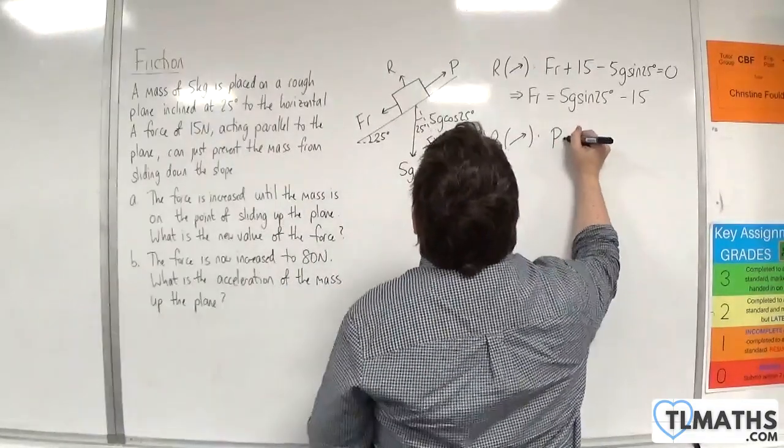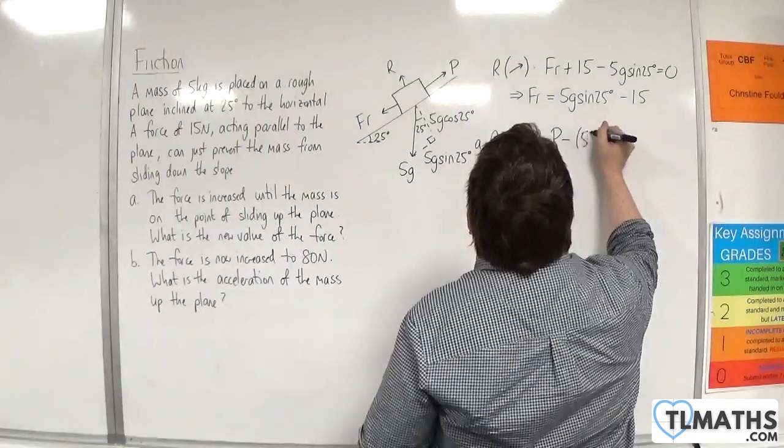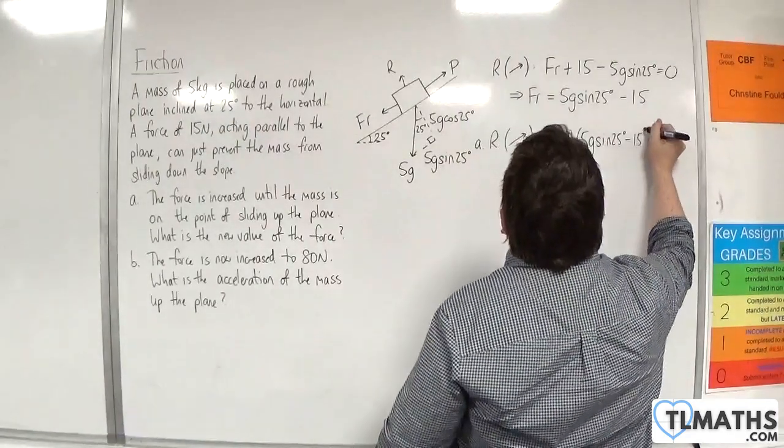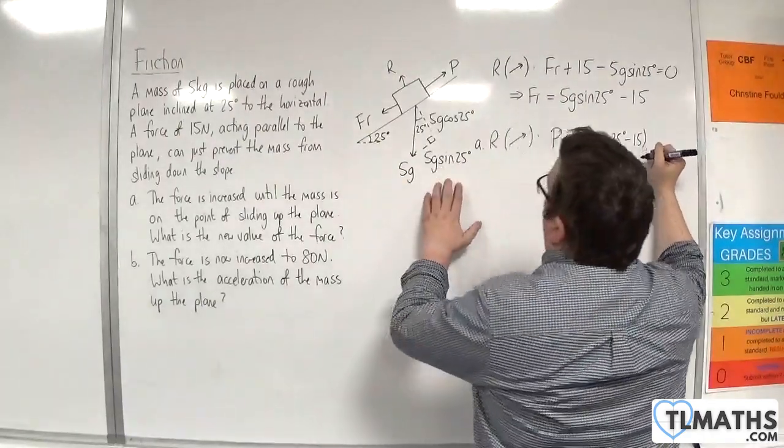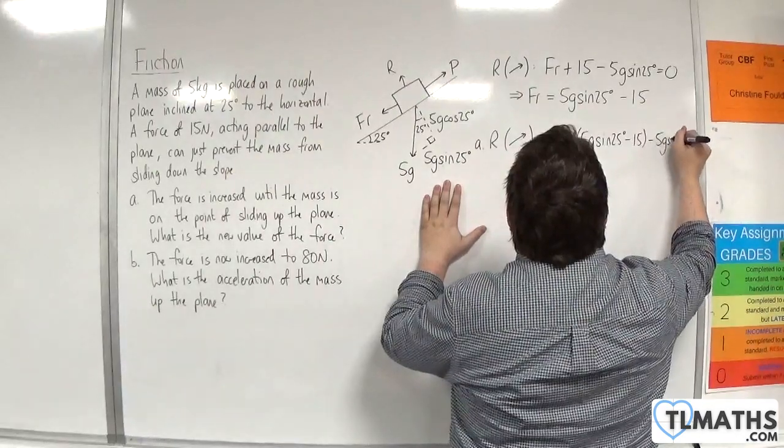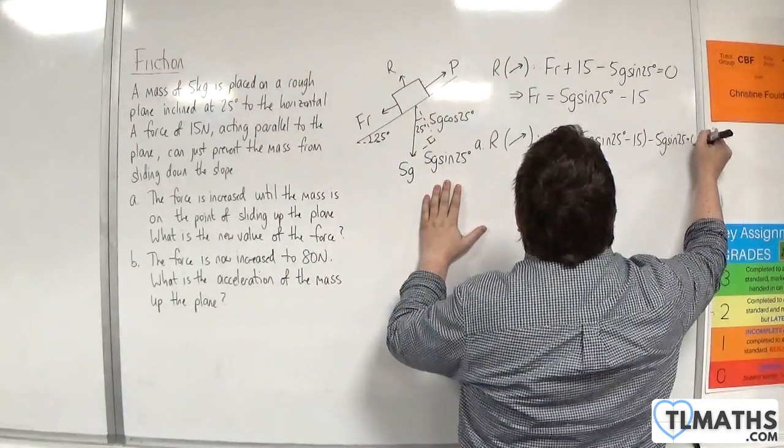We're going to have P take away the friction, 5g sin of 25 take away 15, take away the 5g sin of 25. And that's going to be equal to 0.